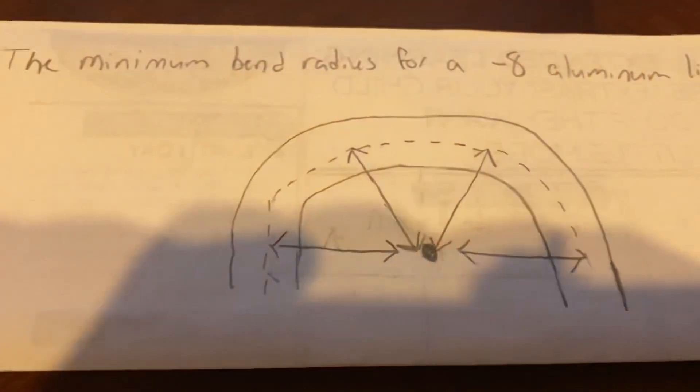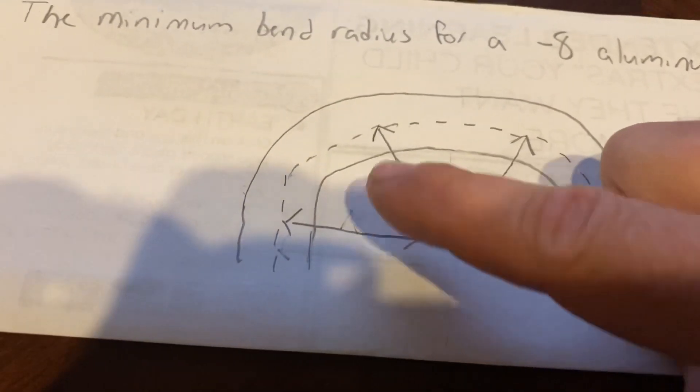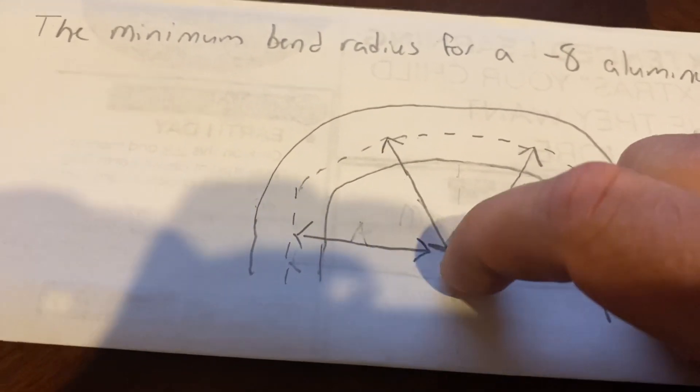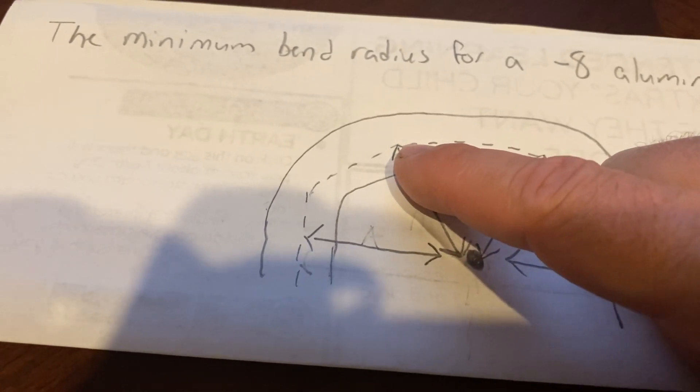So what that means is if I was to take this bend here and I measured from the center here to any point center line on that tube, I cannot be less than the minimum bend radius, which would be an inch and a quarter.